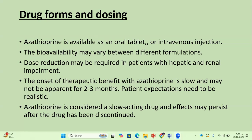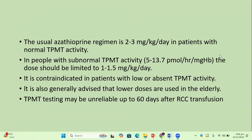Patient expectations need to be realistic. Since azathioprine is a slow-acting drug, its effect may persist after the drug has been discontinued for a few months. The usual azathioprine regimen is 2-3 mg per kg per day in patients with normal thiopurine methyltransferase activity. In patients with subnormal TPMT activity — that is, between 5 and 13.7 picomoles — the dose should be limited to 1-1.5 mg per kg per day in divided doses. It is contraindicated in patients with low or absent TPMT activity. Lower doses are also generally advised in elderly patients, and TPMT testing is unreliable for up to 60 days after red cell transfusion.